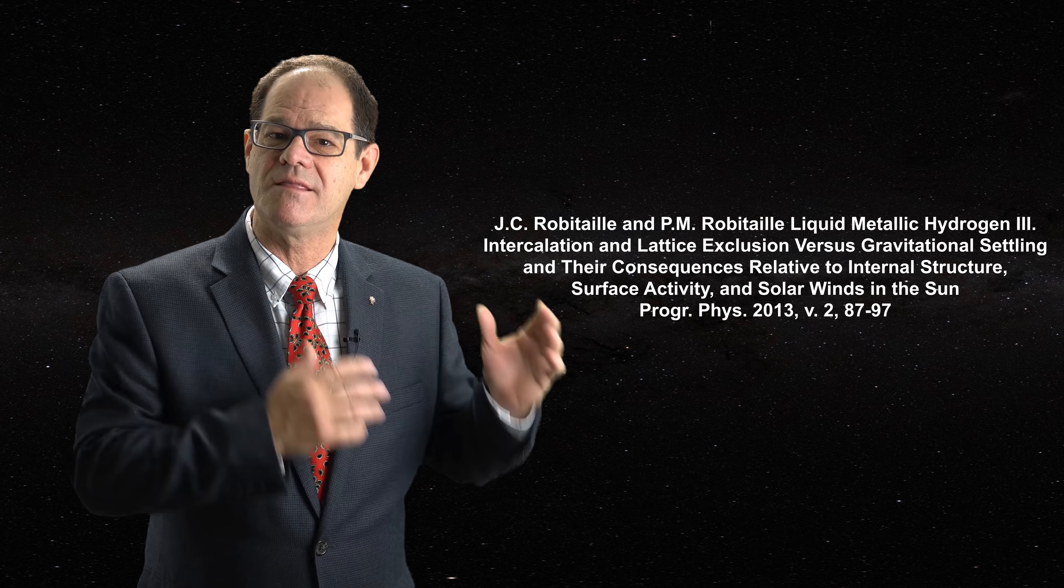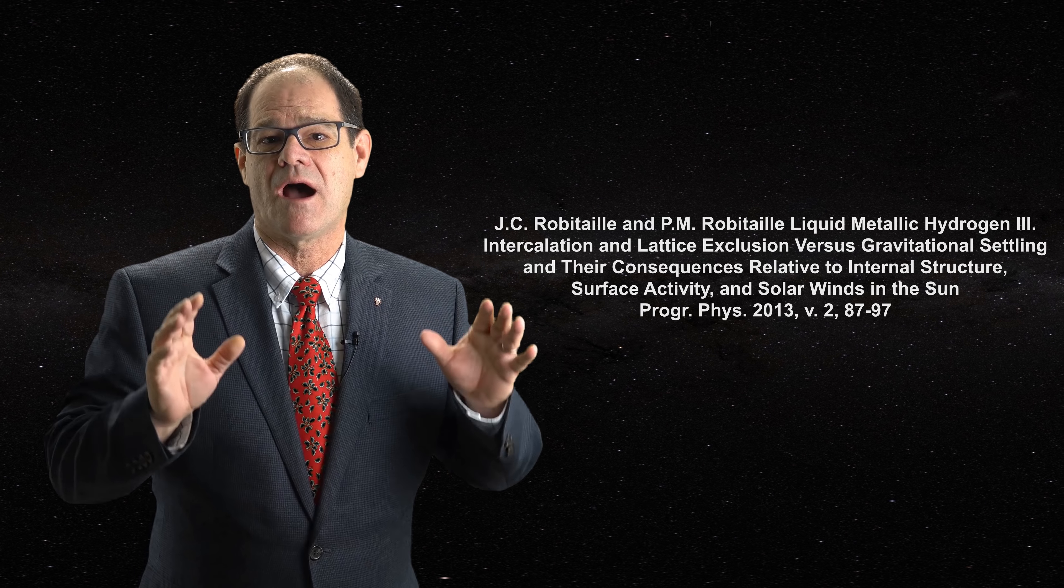Because type 1 and type 2 metallic hydrogen share the hexagonal planar structure of graphite, these materials also accommodate what are known as intercalate regions first described in this paper. Hydrogen atoms make up the hexagonal planar lattice while non-hydrogen atoms are located between these planes. The presence of intercalate regions is vital to properly understanding the behavior of the Sun and the stars and we will return to this idea in future videos.